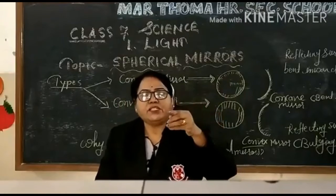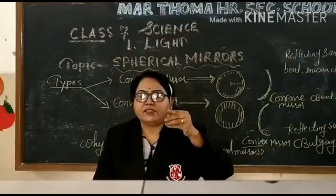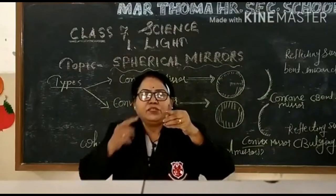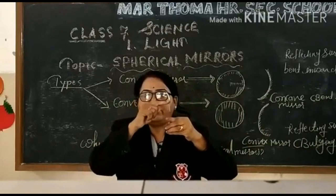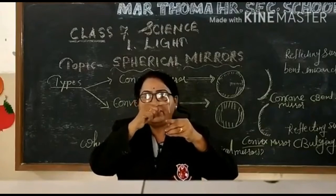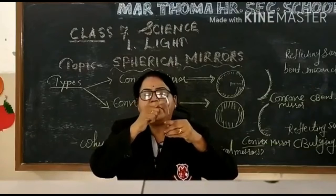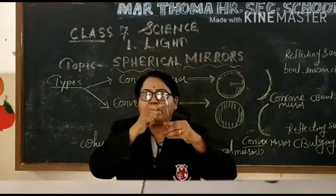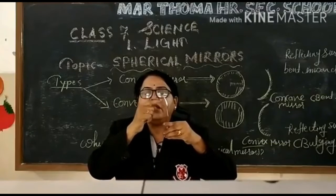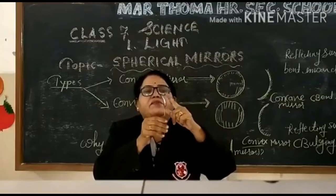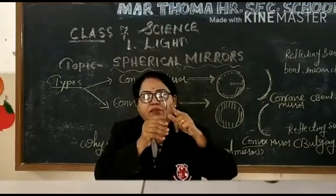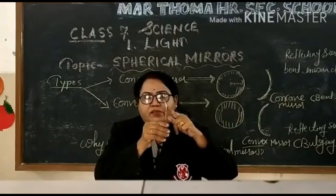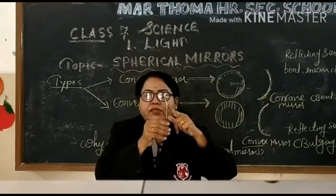Let's see this spoon — this tiny spoon acts like both types of mirrors. The side that is bent inward works like a concave mirror, and the side that is bulging outward works like a convex mirror.